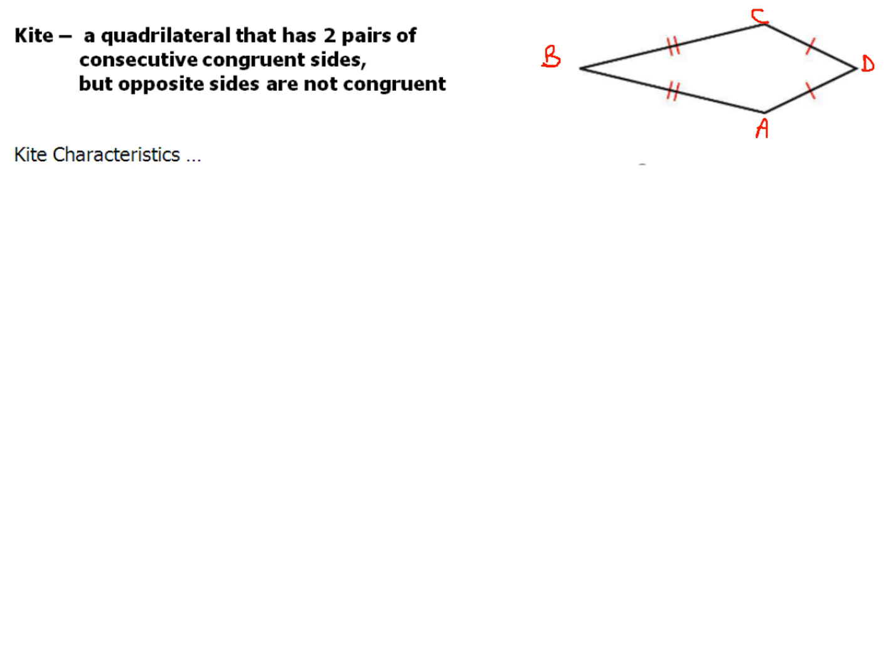So if I label a kite like this, A, B, C, D in that order, the opposite sides are going to be the ones that are not congruent. Consecutive sides are going to be congruent. And this just kind of makes sense.